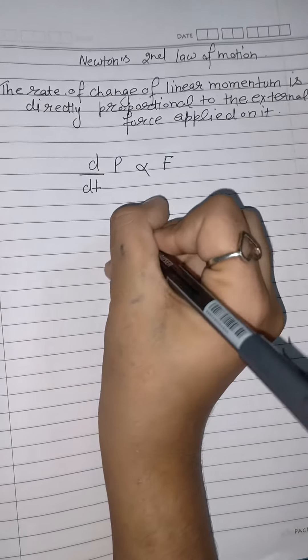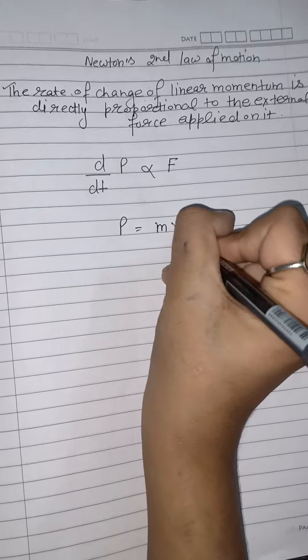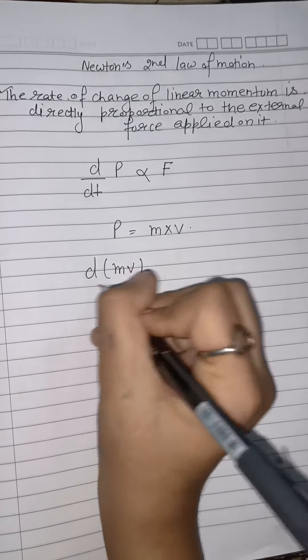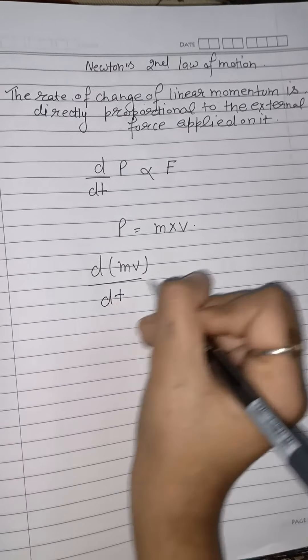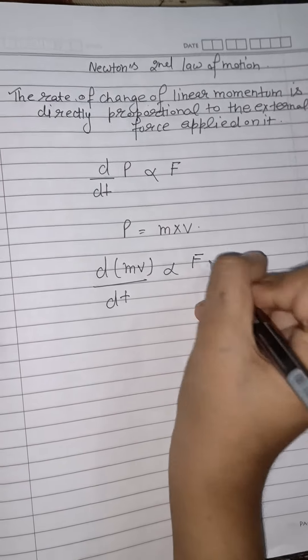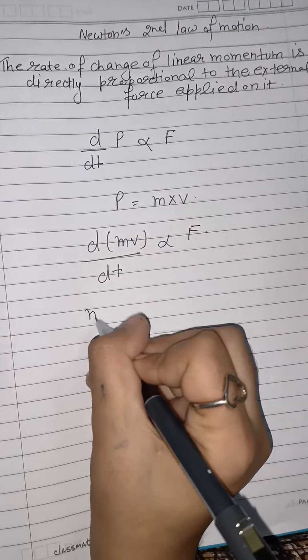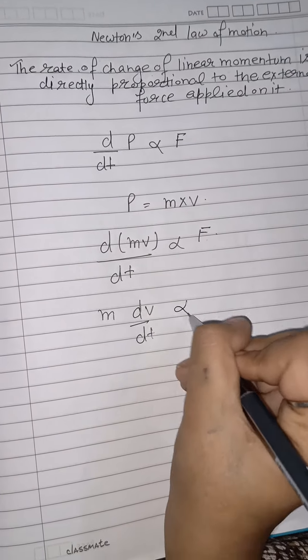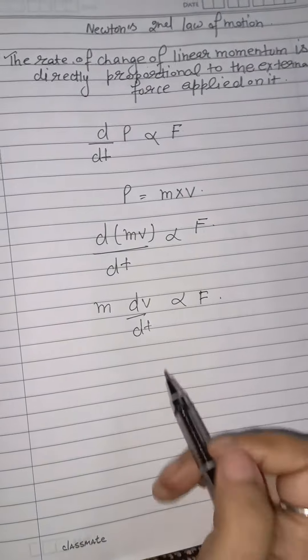Now what is the linear momentum? Mass into velocity. We put the value of P here. d(mv) by dt proportional to the force. Where mass is constant, dv by dt proportional to the force. So what is dv by dt?